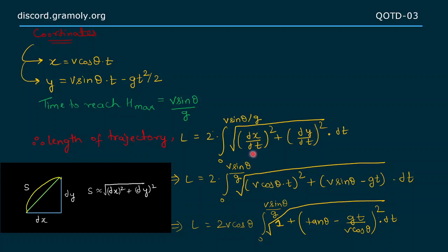Using the values of dx/dt and dy/dt, we get length of trajectory equals 2 times integration of root under (v cos θ)² plus (v sin θ - gt)² times dt from 0 to v sin θ by g.